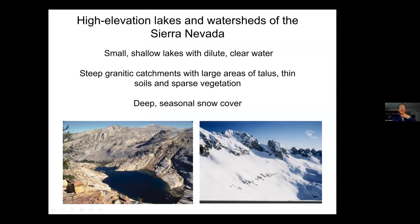The high elevation Sierra lakes are, in general, fairly small and fairly shallow. The water is very dilute — very low in solutes — and tends to be very clear, features that we're all attracted to. The watersheds, as you see in this picture of the Pear Lake Basin, are largely steep granitic watersheds. There are places with metamorphic and volcanic rocks, but a lot of it is granitic, with large areas of rock, thin soils, sparse vegetation, and deep seasonal snow cover.